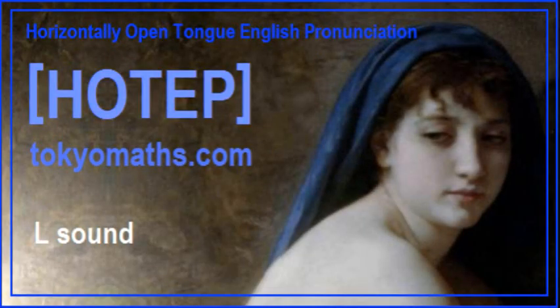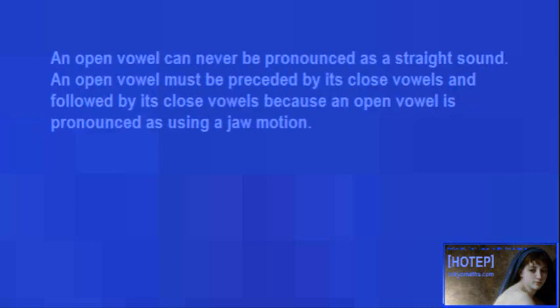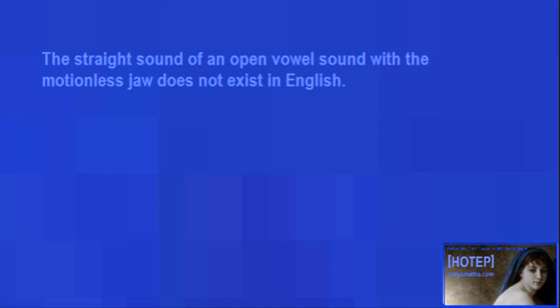Vowel sliding is not a linking between two vowels, and it is not a gliding vowel between the two elements of a diphthong either. Vowel sliding is an opening and closing change throughout one accented vowel. An open vowel can never be pronounced as a straight sound. An open vowel must be preceded by its close vowels and followed by its close vowels, because an open vowel is pronounced using a jaw motion. The straight sound of an open vowel with a motionless jaw does not exist in English.